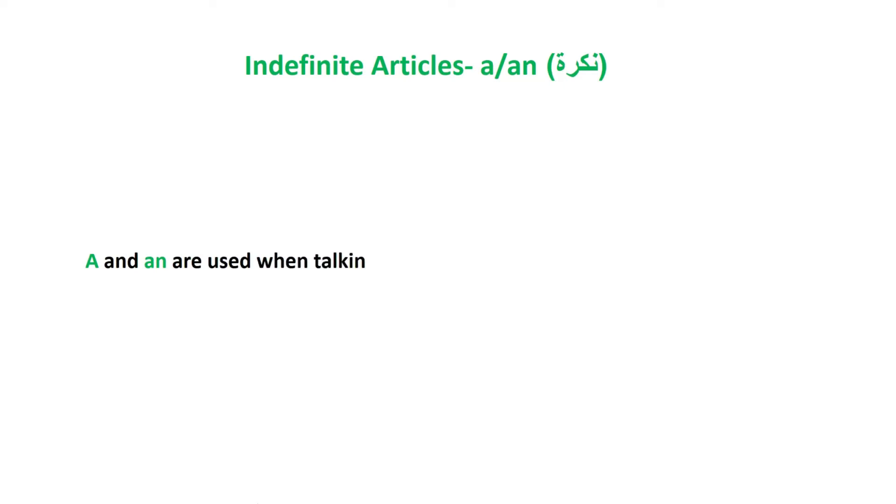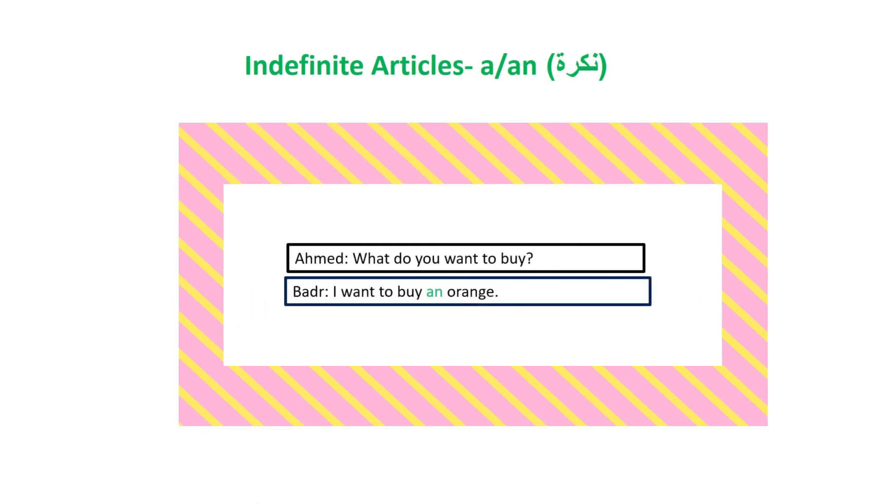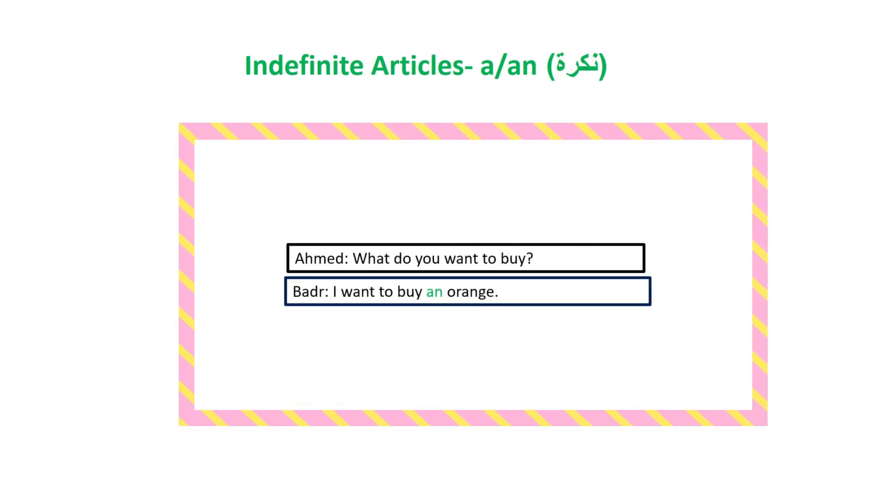We also use indefinite articles when talking about something that is not specifically known to the person you are talking to. For example, in this conversation, Ahmed asks, 'What do you want to buy?' Badr says, 'I want to buy an orange.' We use 'an' here because the orange is not specifically known by Ahmed.